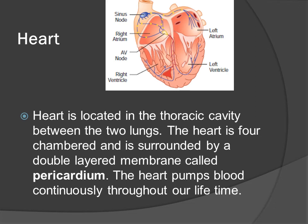The heart is located in the thoracic cavity between the two lungs. It is four-chambered and is surrounded by a double layer membrane called pericardium. The heart pumps blood continuously throughout our lifetime. The four chambers are: right atrium, right ventricle, left atrium and left ventricle, with the sinus node and AV node regulating the heartbeat.